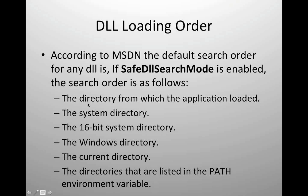The OS will first go to the directory from which the application is loaded and try to find the DLL. If found, it will load it. In case the DLL is not found, it will go to the system directory, then the 16-bit system directory, Windows directory, current directory, and the directories listed in the environment PATH variable. This is the search order when Safe DLL search mode is enabled.